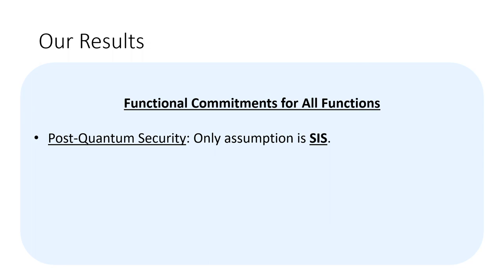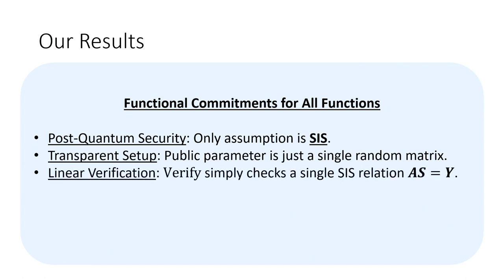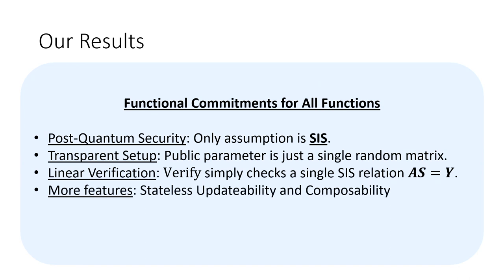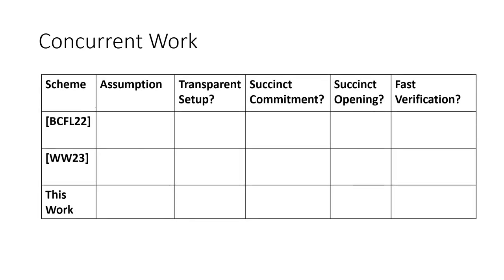Our only assumption is SIS, giving post-quantum security. We have transparent setup — public parameters are just a single random matrix. We have linear verification: the verifier only ever checks a single linear relation. Two concurrent works are: Bobath et al. on chainable functional commitments, and the work of Wei and Woo that we'll hear about on Thursday. All three construct functional commitments for all functions from lattice assumptions, but ours is the only one using a standard assumption and the only one with transparent setup — the other two require private randomness in setup.